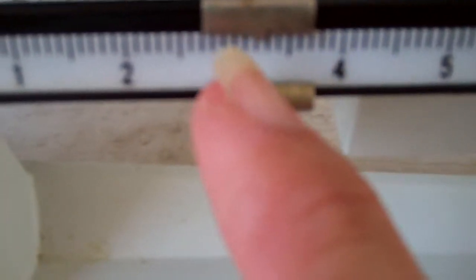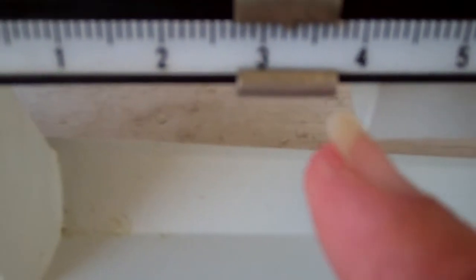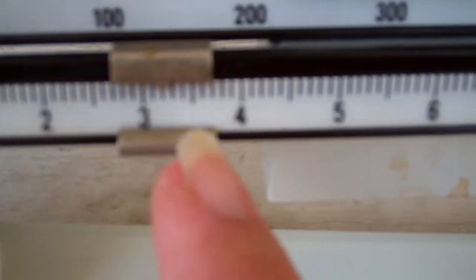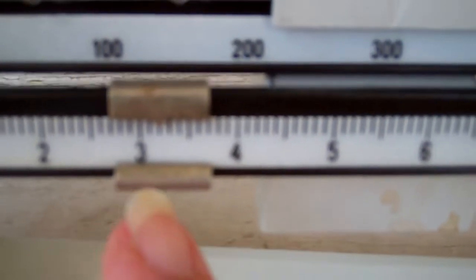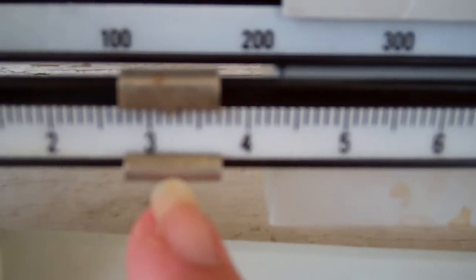This front one, if you notice the pointer, which is right here, it's not sitting directly on the three, it's past that. So the way you would read this is that it's three, three point two. It's two little lines past the two. So this is three point two grams.